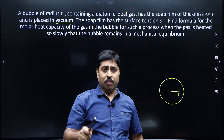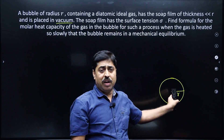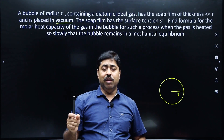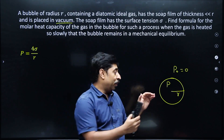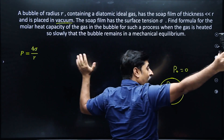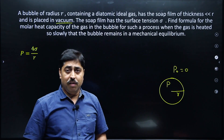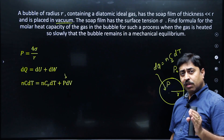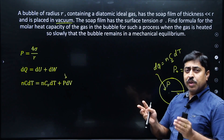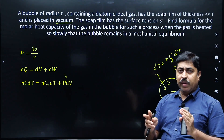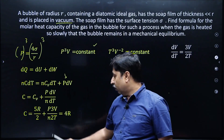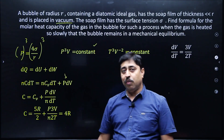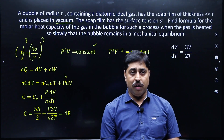Bubble is in vacuum, there is an ideal diatomic gas inside it, it is being heated slowly. Then what will happen? It will start expanding at a great speed. In most of the questions in thermodynamics, there is always a relationship given between the thermodynamic variables. 3R/2 plus 5R/2 gives 4R.